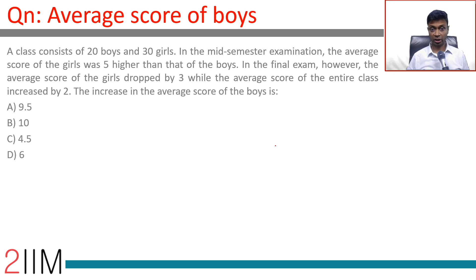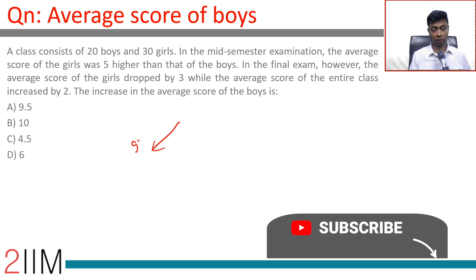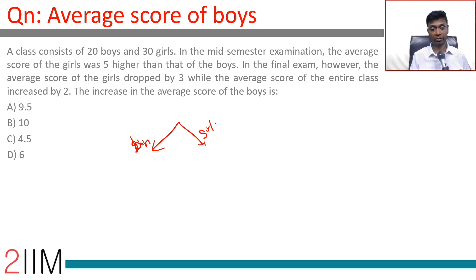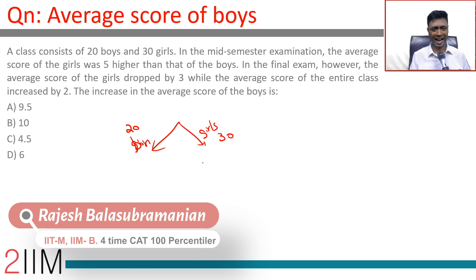A class consists of 20 boys and 30 girls. In the mid-semester examination, the average score of the girls was 5 higher than that of the boys. Boys and girls: 20 and 30. Average of boys was n, girls would have been n plus 5.